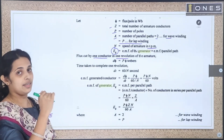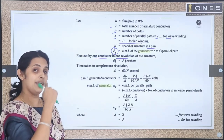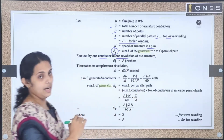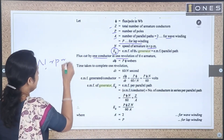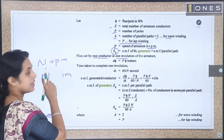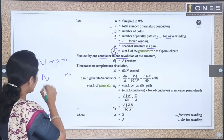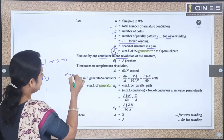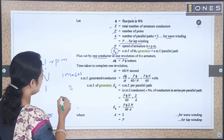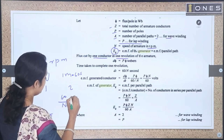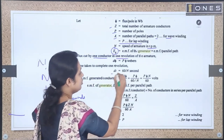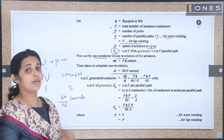We have to calculate the time. The armature rotates at n RPM. One minute equals 60 seconds, so the time taken to complete one revolution is 60 divided by n seconds. Time taken to complete one revolution is equal to 60/n seconds.